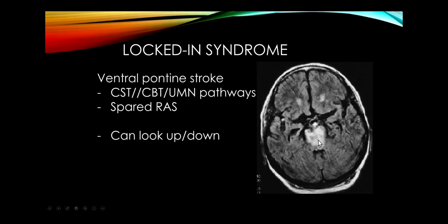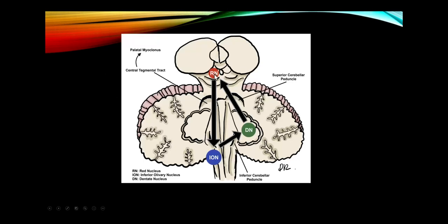A large pons stroke can cause locked-in syndrome: all upper motor neuron pathways are disrupted so the patient can't move their arms and legs or swallow. If enough of the reticular activating system is preserved, the patient is awake. Vertical eye movements, supplied by the midbrain, are preserved, allowing communication by looking up and down or blinking. A lesion of the Mollaret's triangle — red nucleus to inferior olivary nucleus to dentate nucleus and back — can cause palatal myoclonus, a good localizing finding, and can occur with MS demyelination.